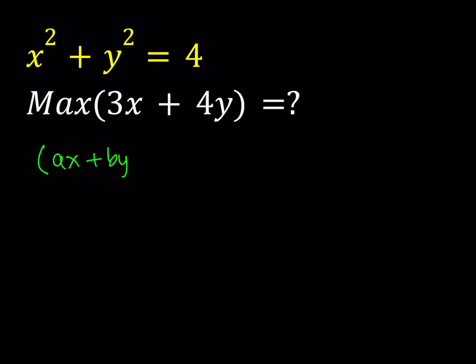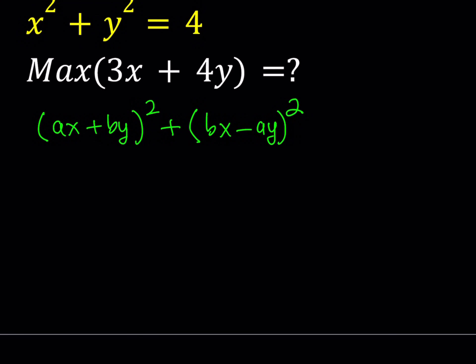ax plus by quantity squared, and this kind of makes sense because we're trying to maximize something that looks like this, right? 3x plus 4y, and you can tell from here that a is equal to 3 and b is equal to 4. So I'm going to add something that looks like this, but it's going to be slightly different. I'm going to switch the coefficients of x and y, so it's going to look like this: bx, and I'm going to switch the sign. And you'll see in a little bit why I'm doing this. So when you expand the first one, you're going to be getting a²x² plus 2axby plus b²y². And the second one is going to give you b²x² minus 2abxy plus a²y².